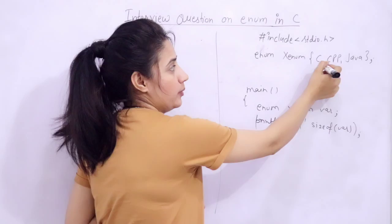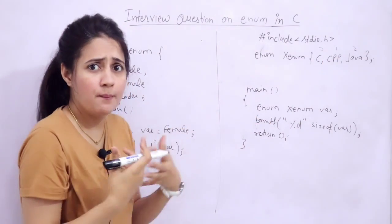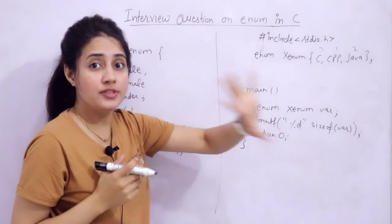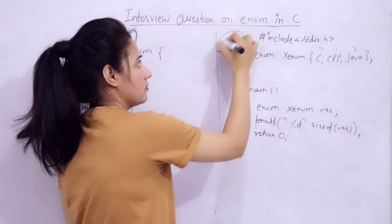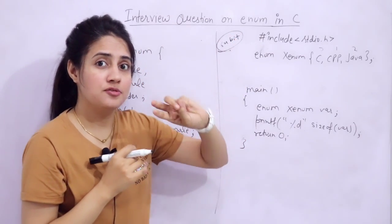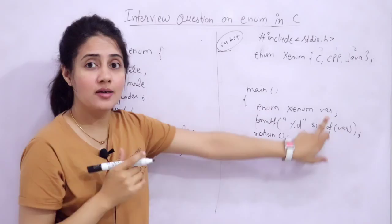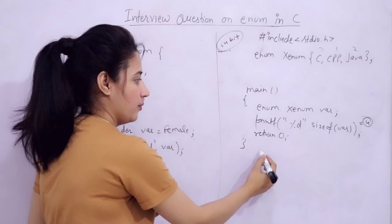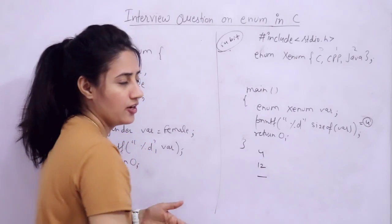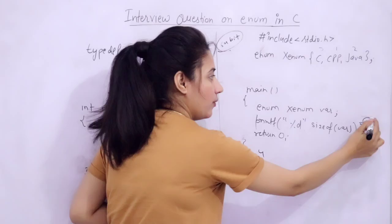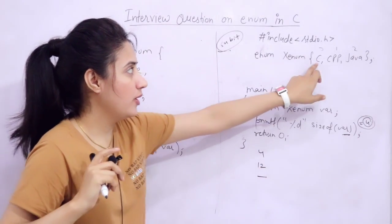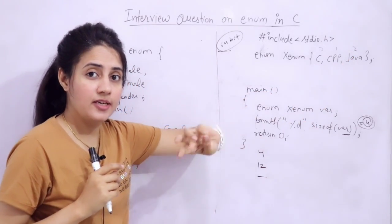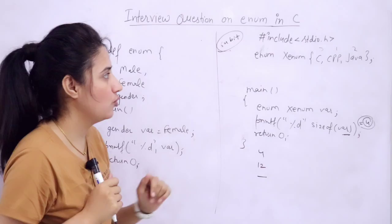By default, this would be considered as 0, 1, 2 by the compiler as integers 0, 1, 2. The size of integer on 64 bit machine - I am running this - the size of int is 4 bytes. That's why sizeof var would be 4 bytes here. Maybe in MCQs you will get like 4 bytes or 12 bytes or some error, these kinds of things.